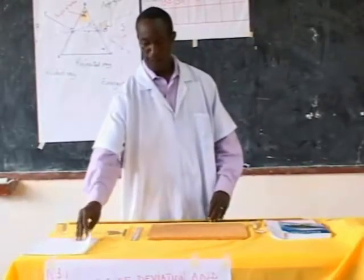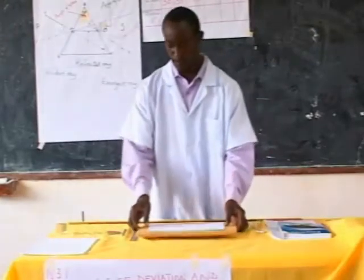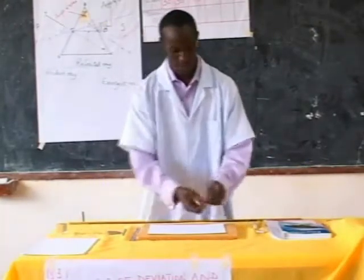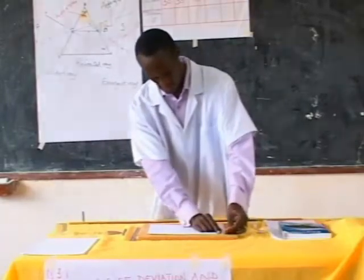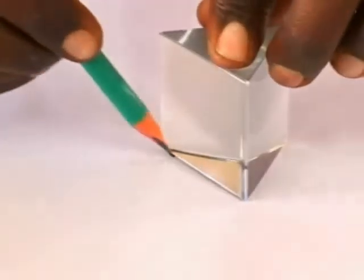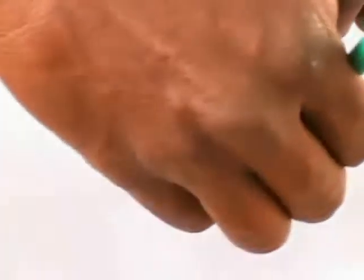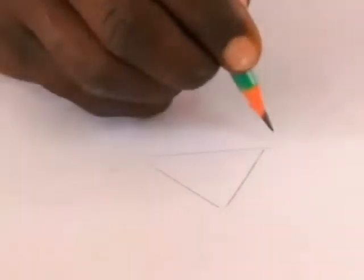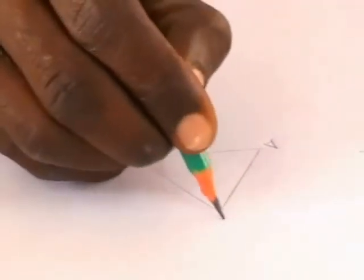Procedures: Set a white sheet of paper on a drawing board using drawing pins. Place the triangular glass prism, then trace the edges of the glass prism and name it as prism ABC. By using a ruler, produce a normal just at the midpoint of side AB.